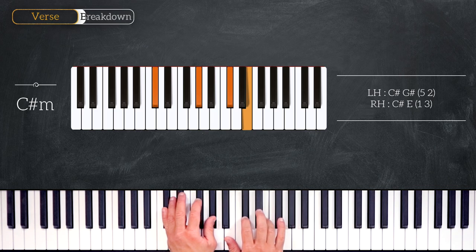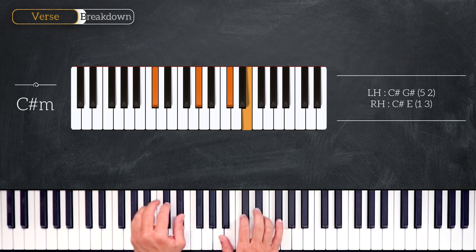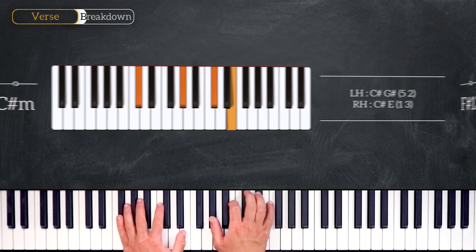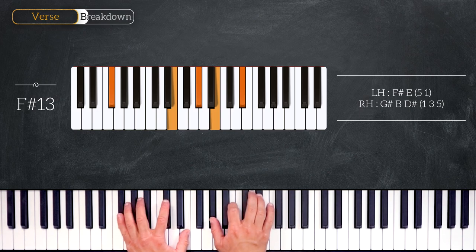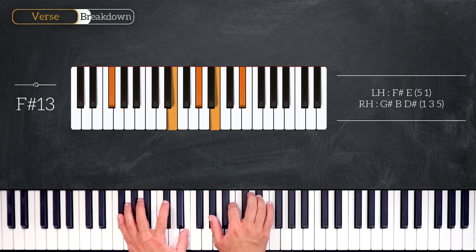We finish the chord progression on the fifth degree playing an F# 13. On the left hand we have F# and E, and on the right we play G#, B, and D#. Those notes represent the ninth, the eleventh, and the thirteenth.